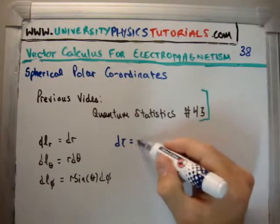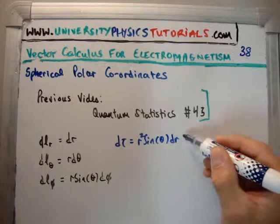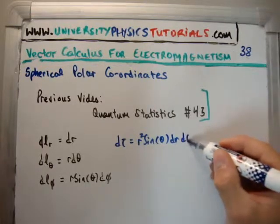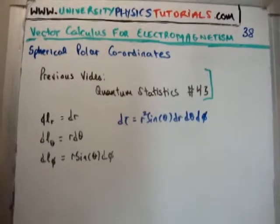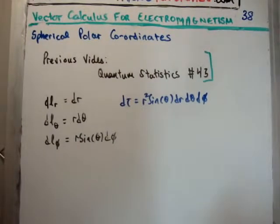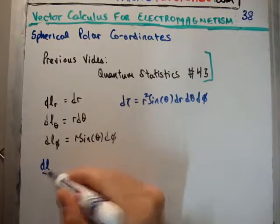However, you have only one particular volume element, d tau. And that's obviously multiplying dl sub r, dl sub theta, and dl sub phi together. So d tau simply is going to be equal to r squared sin theta dr d theta d phi. That's the infinitesimal volume element.